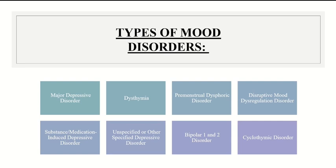Disruptive mood dysregulation disorder is usually diagnosed in children and is characterized by depressed mood and tantrums. There's also substance/medication-induced depressive disorder, which is self-explanatory, and unspecified or other specified depressive disorders. Bipolar 1 and Bipolar 2 are in a different category of mental disorders, but they're still categorized as mood disorders.